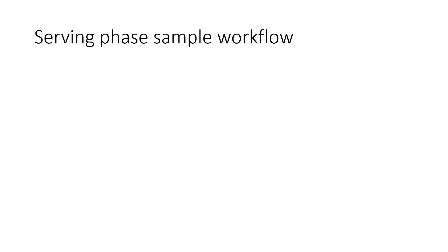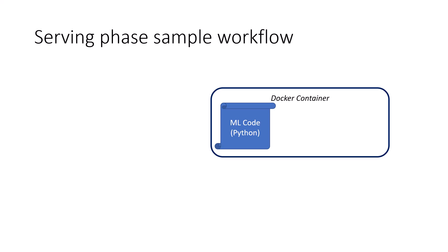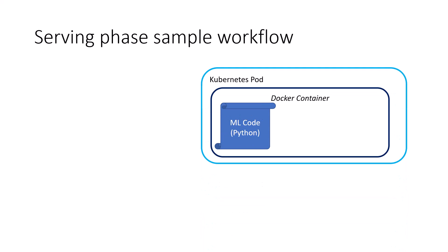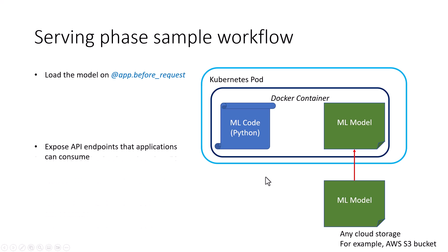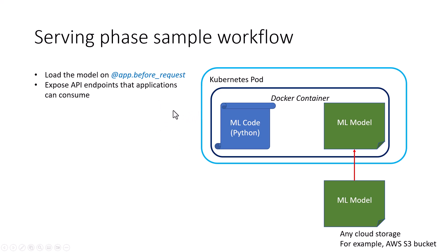Now let's look at the serving phase. In the serving phase, you want to turn the machine learning model into APIs that the client application can consume. There are a variety of open source frameworks to do this. For example, in Python you can use Flask, and in the following series of videos I will be showing you a sample application using Python and Flask. SAP AI Core can help you run the Python code in the Kubernetes cluster — we saw that with the training phase as well, and similarly with the serving phase. It can help with copying the trained model into the container. This code requires the trained model that you copied into cloud storage in the previous session — you bring it into this Docker container, load the model in your Python code, and expose the API endpoints that do the prediction. This is a sample workflow for the serving phase.